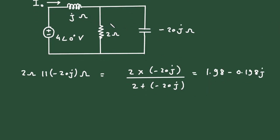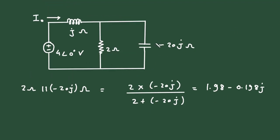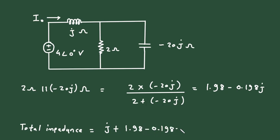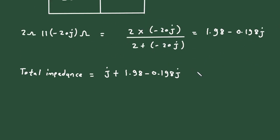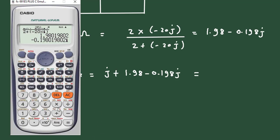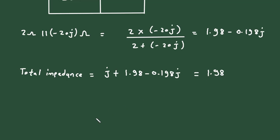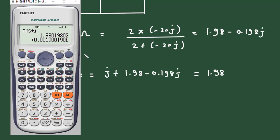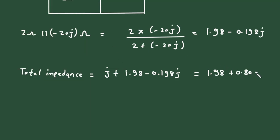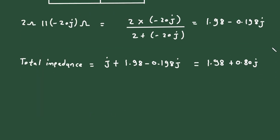Remaking the circuit, the parallel combination 1.98 − 0.198j is in series with the inductor impedance j ohm. So the total impedance Z equals j + (1.98 − 0.198j), which gives Z = 1.98 + 0.802j ohm.